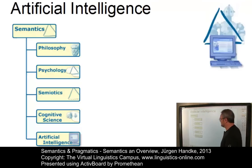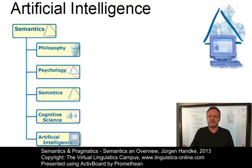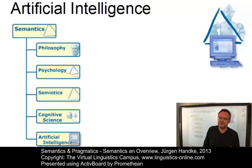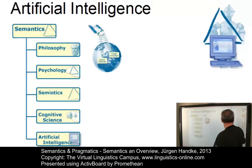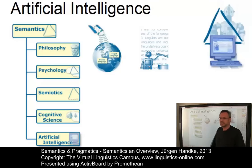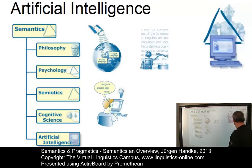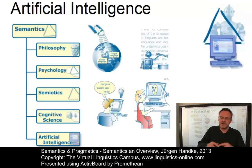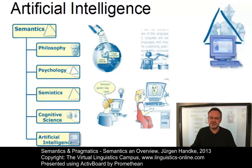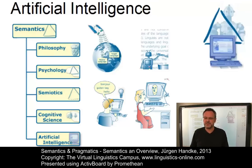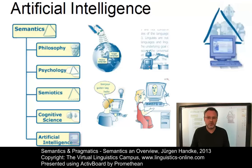The last field to discuss is artificial intelligence, which has been defined as the science of making machines do things that would require intelligence if done by humans. This includes the ability to handle language in applications such as machine translation, information extraction and retrieval, man-machine interfaces, and intelligent tutoring. In order to succeed in any of these, machines require knowledge about the meanings of words and how word meanings combine to form sentences, as well as encyclopedic knowledge about the way the world works.